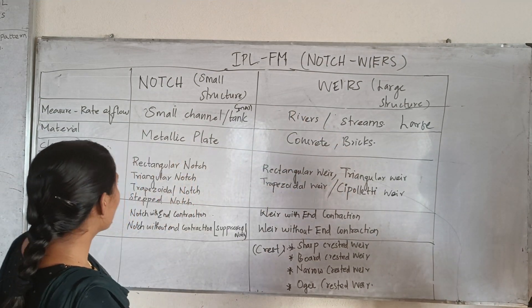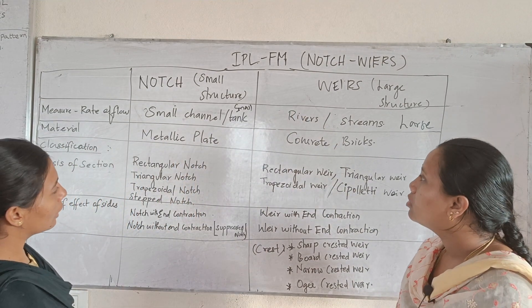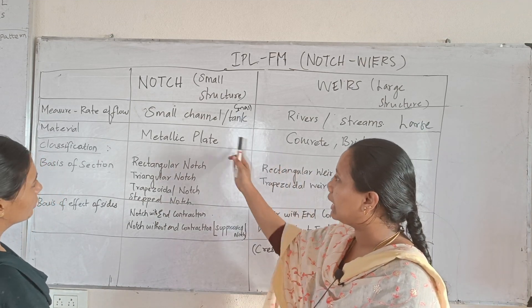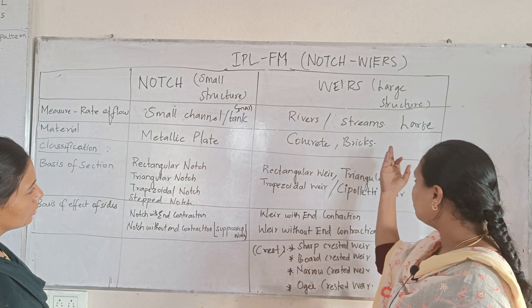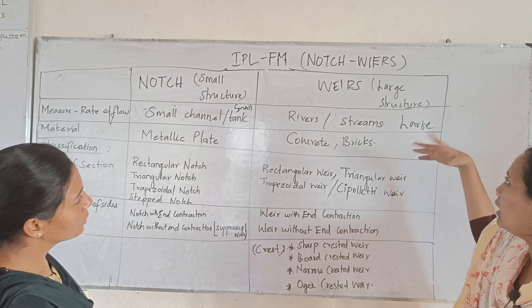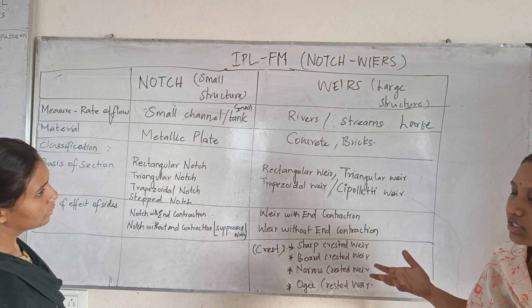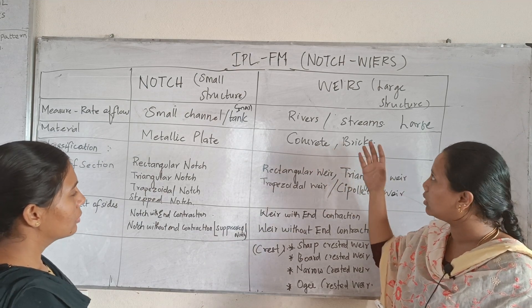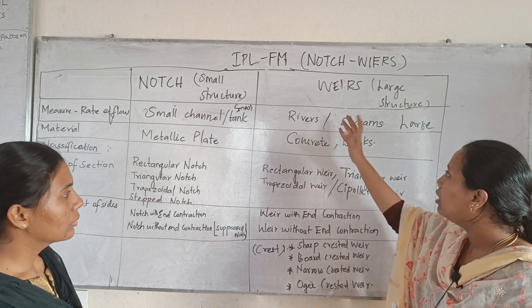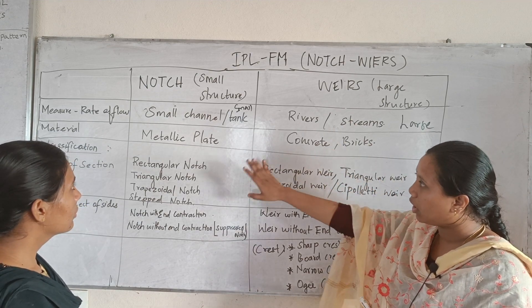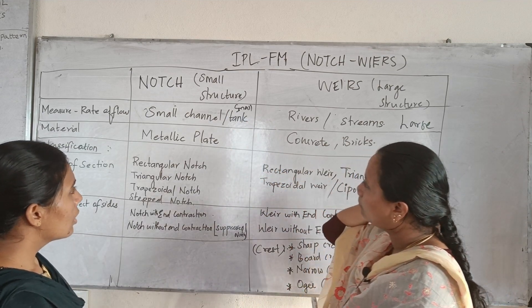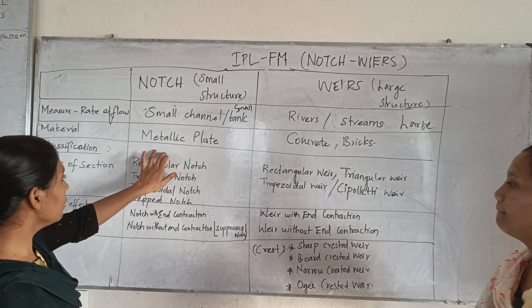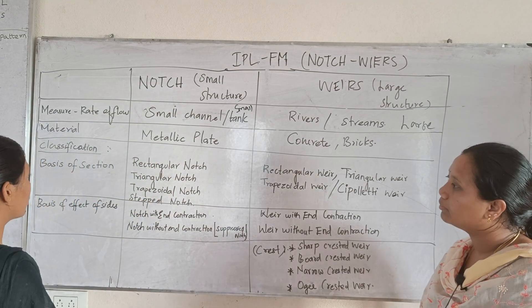Weirs are used broadly. The material used for a notch or small tank channel is a metallic plate. For a large structure like a dam, we use concrete and bricks. So weirs are made up of concrete and bricks.